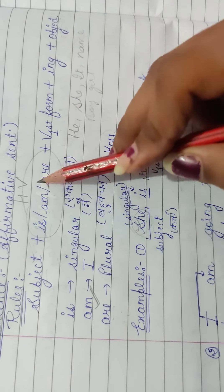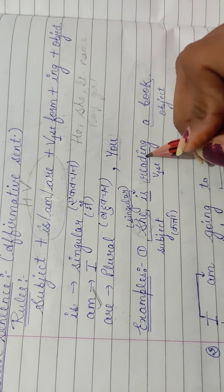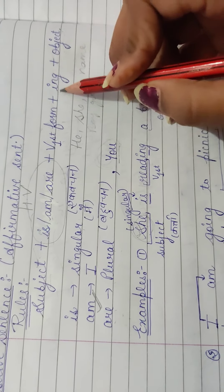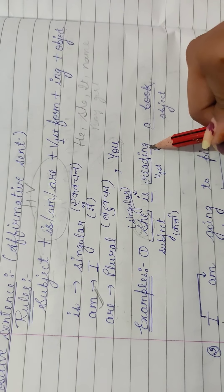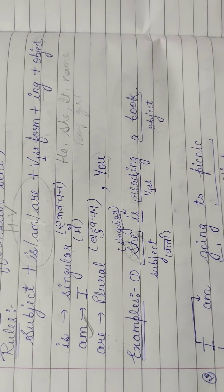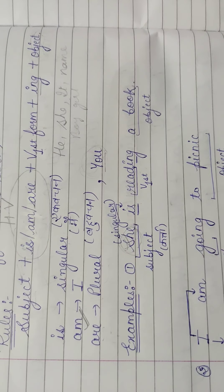To is ke saath, maine is laga diya. Ab yahaan subject ho gaye, humara helping verb ho gaye, us ke baad kiya aate hai? Verb ke first form. Humne verb ke first form use kya: reading. Main read - read, padhna - us ke saath kya lagaate hai? Ing. To reading, us ke saath phir hamara aagya object, a book. To she is reading a book.